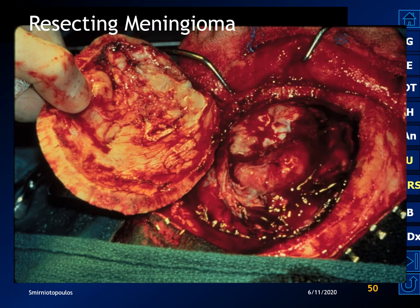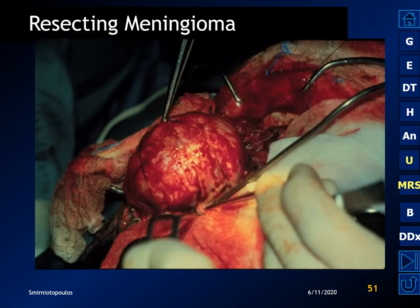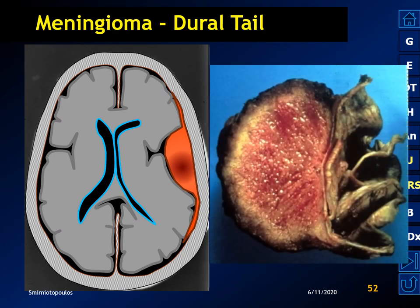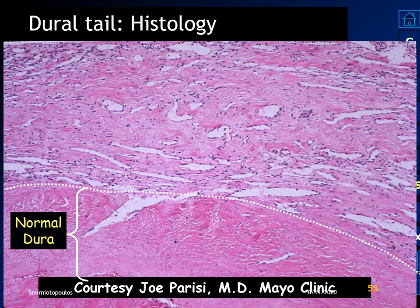Let's resect a meningioma and look at the gross features. In this craniotomy we can see the meningioma adjacent to the brain being delivered through the craniotomy cavity. Comparing the image to the resected specimen, there is a little cuff of tumor crawling along the edge of the dura, but the vast majority of the curvilinear enhancement seen on MR is reactive changes and not neoplastic infiltration. Histologically, there are multiple dilated vascular spaces but no neoplastic cells infiltrating the dura.